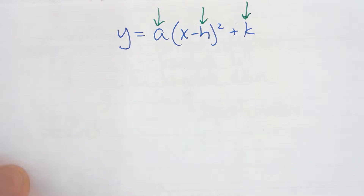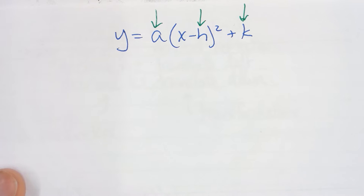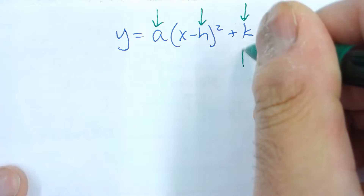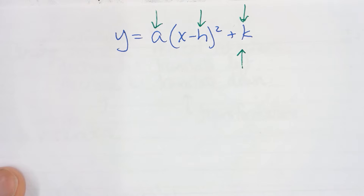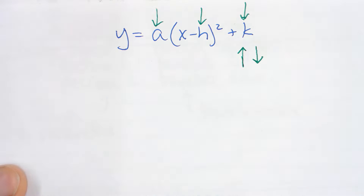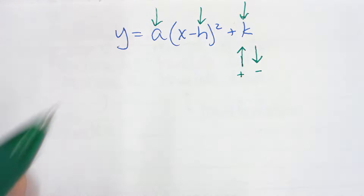Each parameter does something to our parabola, and in general it does something to any function — we'll talk about that more next year. Let's talk about k first. As you increase the value of k, you're going to move your parabola up. As you decrease the value of k, you're going to move your parabola down.